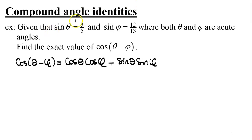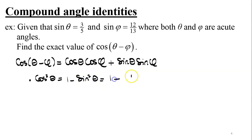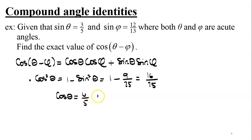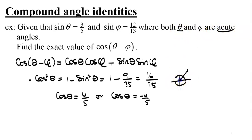Using the Pythagorean identity, cosine squared theta equals 1 minus sine squared theta equals 1 minus 9 over 25, which is 16 over 25. So cosine theta equals 4 over 5 or negative 4 over 5. Since theta is acute and in quadrant one, cosine is positive, so we reject the negative value and take cosine theta equals 4 over 5.